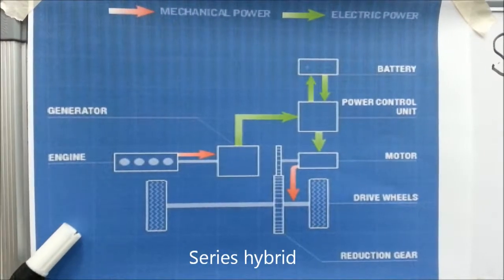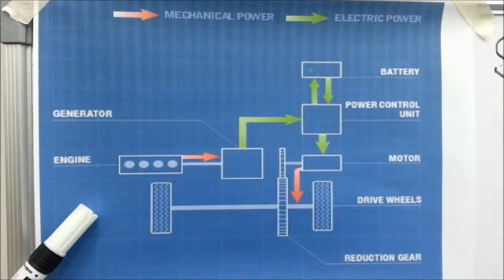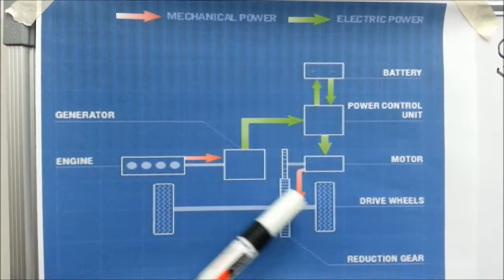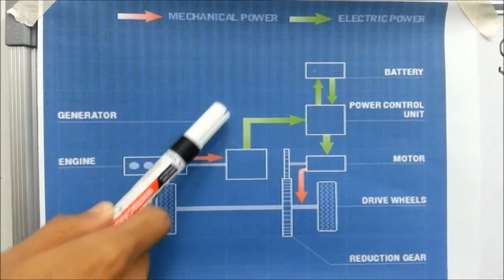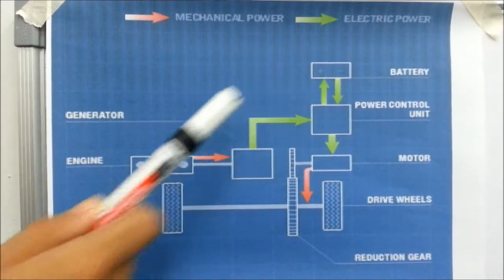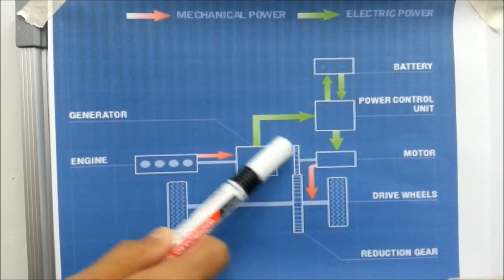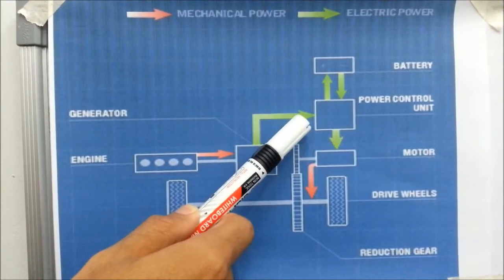In a series hybrid, the power source which is the engine is not directly coupled with the wheel but only through the electric system. In the context of an engine hybrid, this means that all of the energy generated by the engine needs to be converted to electricity.